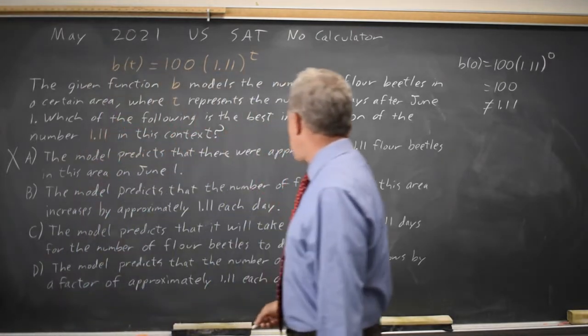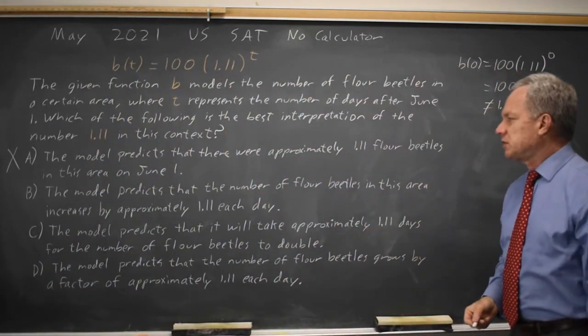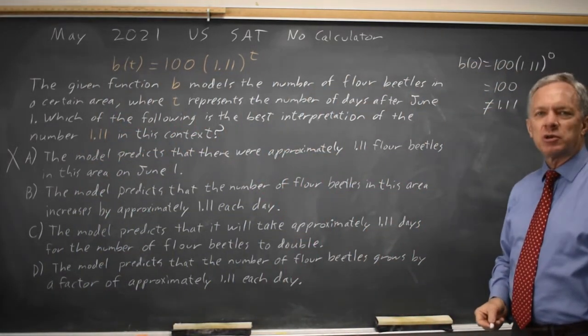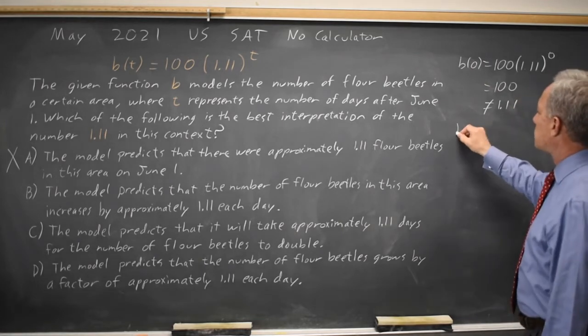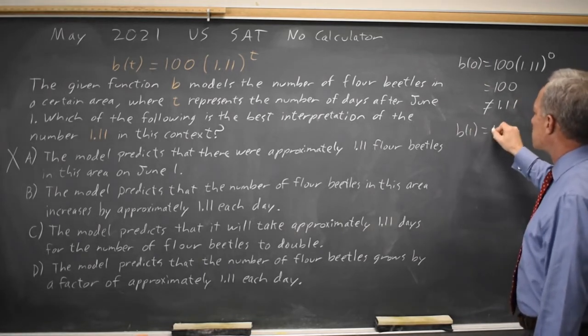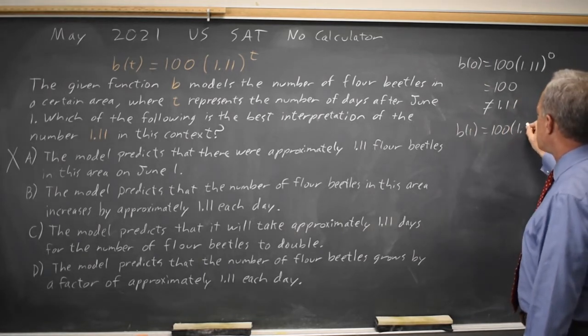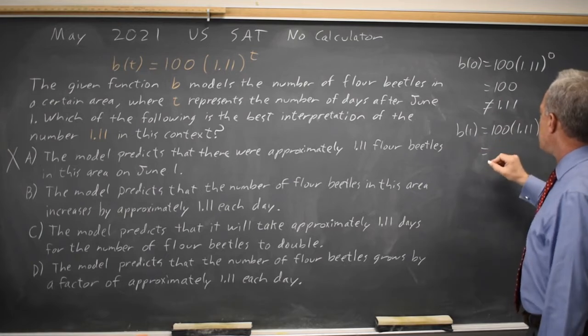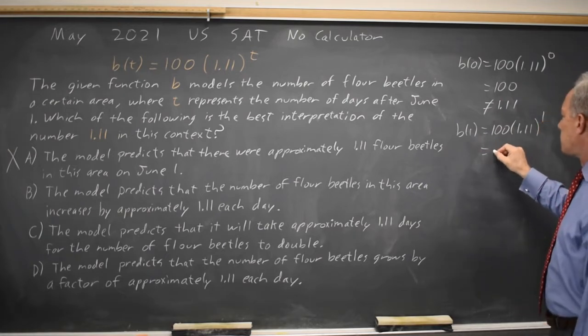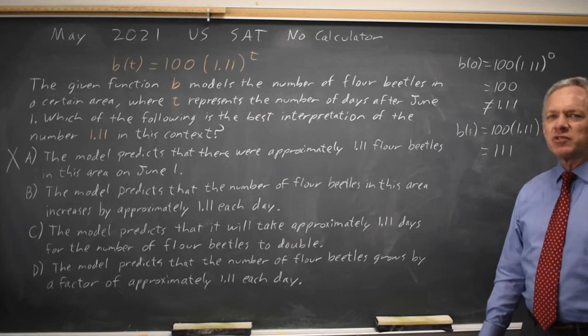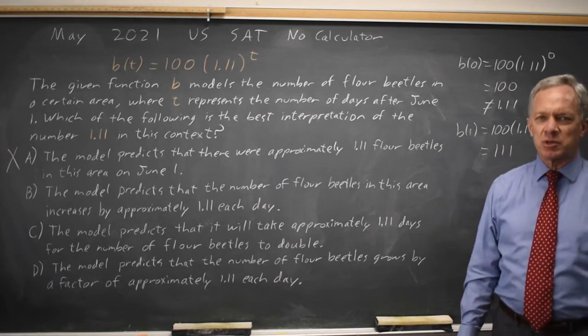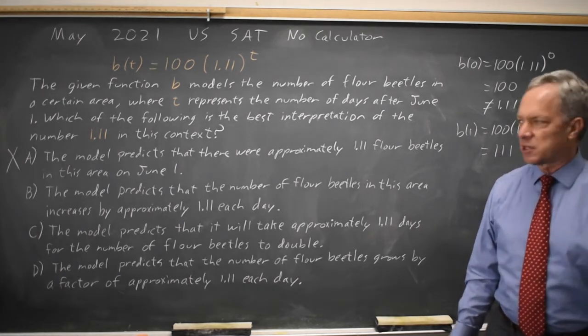Choice B: the model predicts the number of flower beetles increases by approximately 1.11 each day. Let's see what happens at one day. B(1) equals 100 times 1.11 to the first equals 100 times 1.11, which is 111. That's an increase of 11 beetles, not 1.11 beetles, so choice B is not correct.